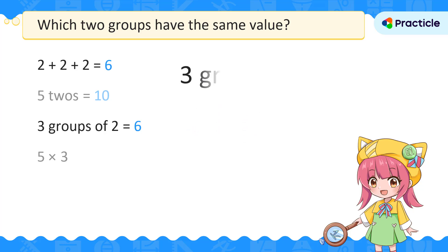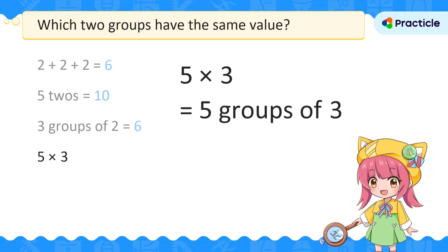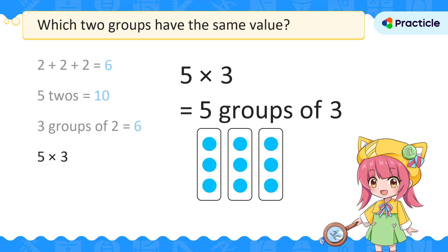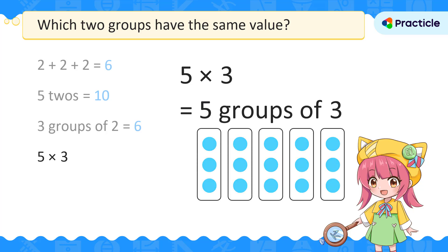To check that group 1 and group 3 is the correct answer, let's look at group 4 and make sure that it is something different. What is 5 times 3? If you're not familiar with the multiplication table of 3 or 5 yet, no sweat. 5 times 3 is the same as 5 groups of 3. Let's use repeated addition to help us out: 3 plus 3 plus 3 plus 3 plus 3 is 15.